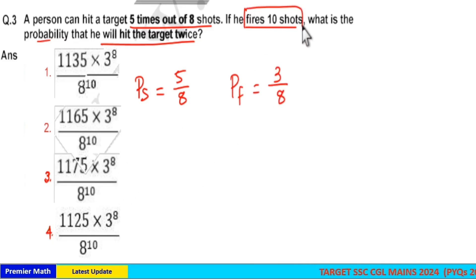Now he fires 10 shots. Out of this 10 shots, he should hit the target twice. So 10C2 ways he can do this. That is out of this 10 shots, he should hit the target twice.